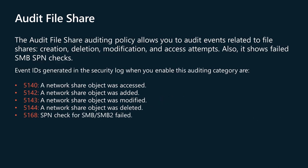The audit file share auditing policy allows you to audit events related to file shares — creation, deletion, modification, and access attempts. It also shows failed SMB service principal name checks. There are no system access control lists for shares; therefore, after this setting is enabled, access to all shares on the system will be audited. Combined with file system auditing, file share auditing enables you to track what content was accessed, the source IP address and port of the request, and the user account that was used for the access. Items written to the security event log when this policy is enabled are listed in the documentation and on the screen.